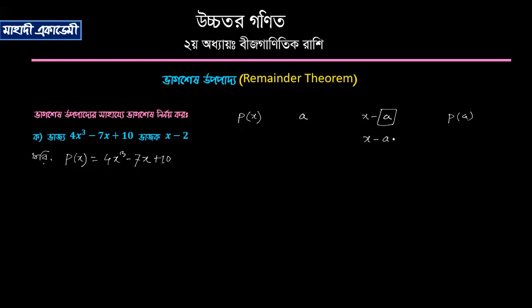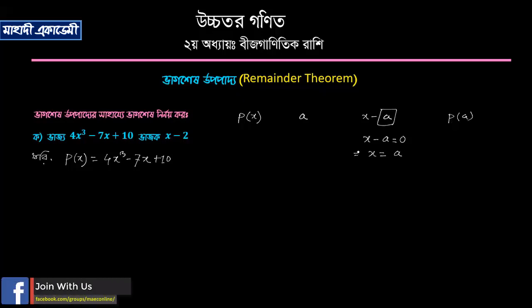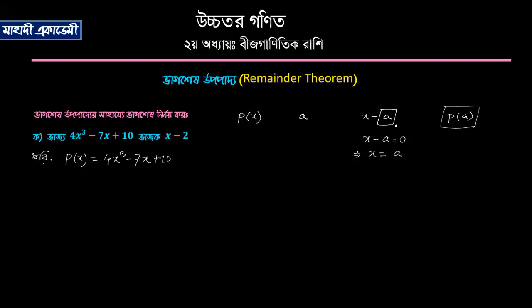If you look at this, you will see that x is equal to 0, and p of x is equal to 0. So if p of x is equal to 0, then p of x is equal to 0.